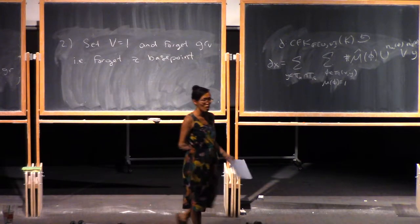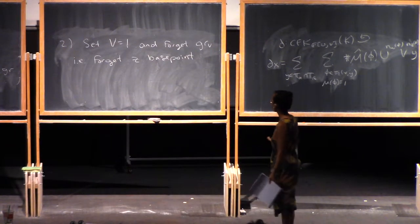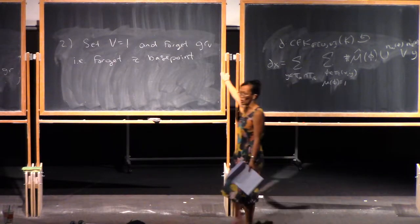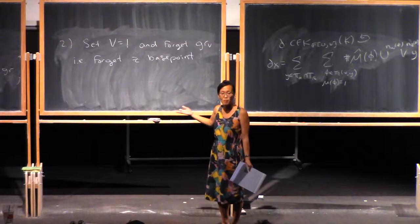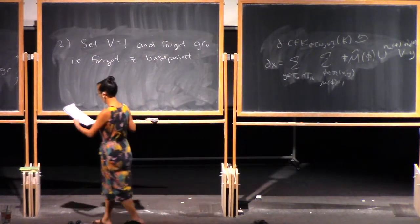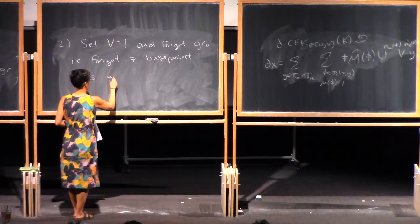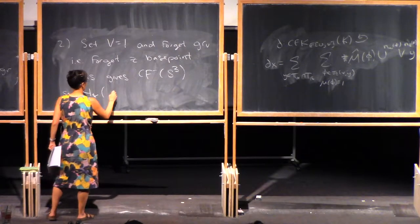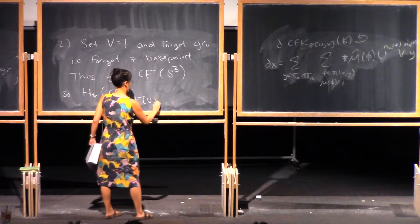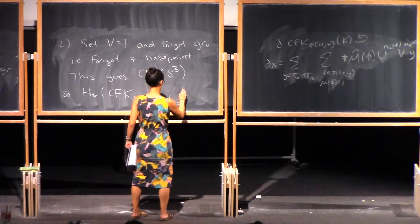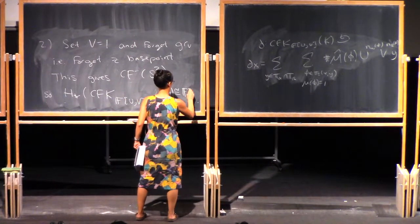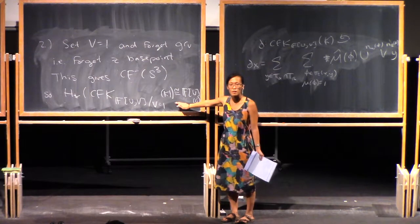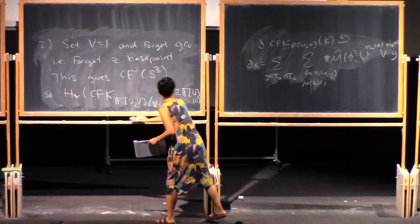If we've forgotten the Z base point, what we have is a singly-pointed Heegaard diagram for S³. Setting V equal to 1 means we're working over F[U], so this exactly gives us CF minus of S³, whose homology is HF minus of S³ = F[U]. We declare this homology to be in grading 0, which pins down the absolute U-grading.